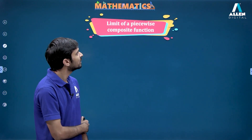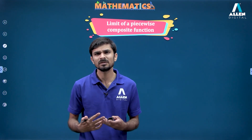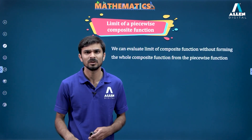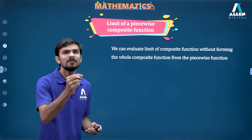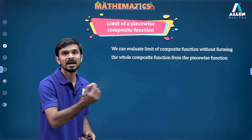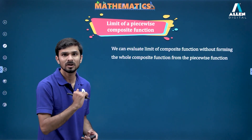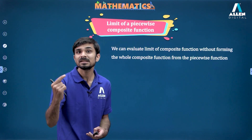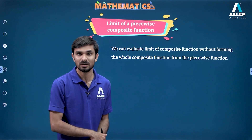Now let's see how to find the limit of a piecewise composite function. For a piecewise composite function, we don't always have to find out the whole composite. We can just find out the value at that particular point by finding the left-hand limit and the right-hand limit and checking whether they are equal. But what we need to take care of is whether the outside function is continuous at that point.